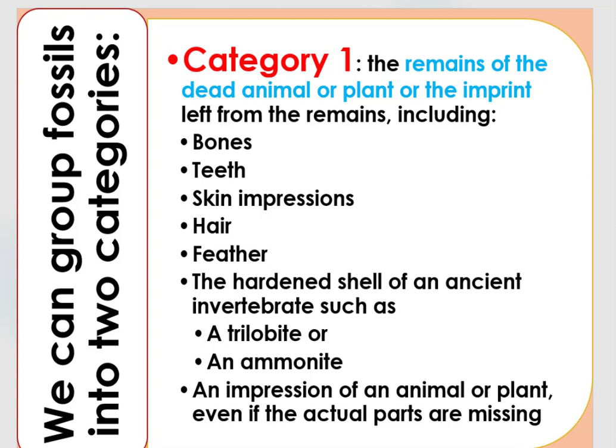Category 1 includes the remains of dead animals or plants, or the imprint left from the dead remains — including bones, teeth, skin impressions, hair, and the hardened shell of an ancient invertebrate such as a trilobite or an ammonite, and the impression of dead remains of animals or plants even if the actual dead parts are missing.